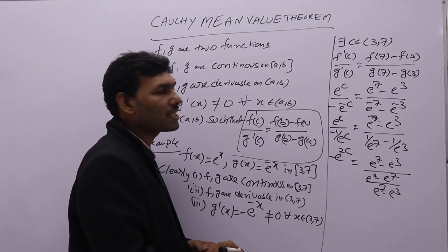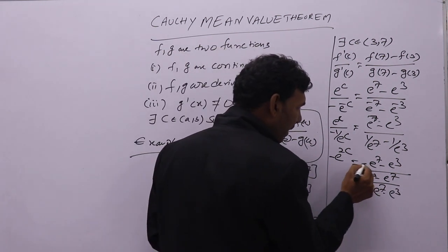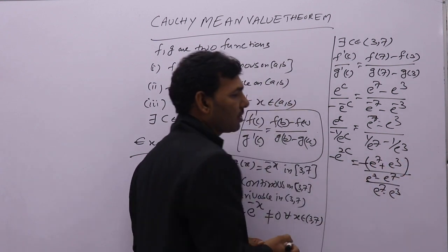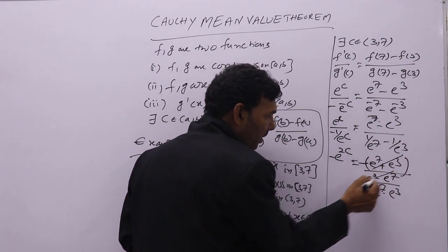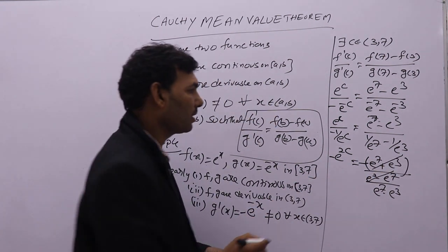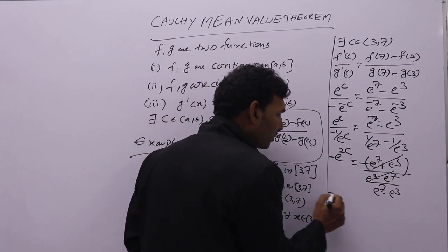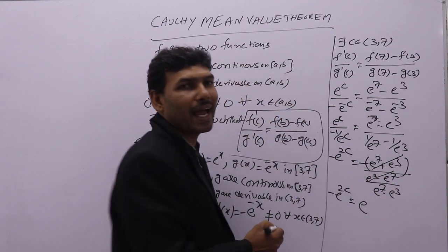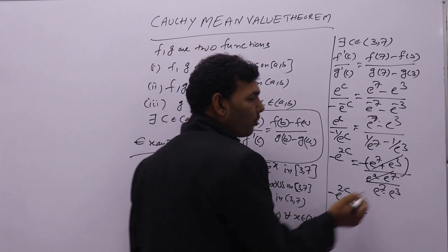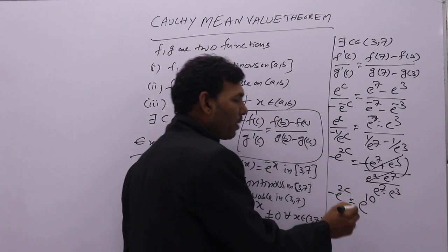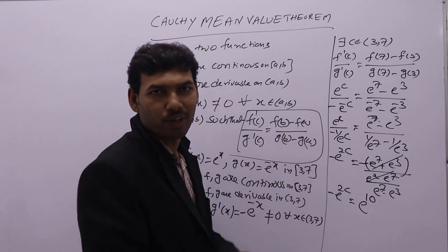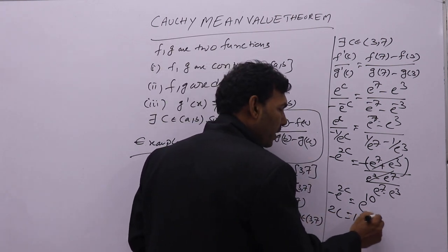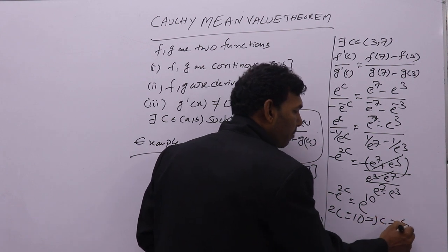Taking minus common from the denominator gives e power 7 minus e power 3, which cancels with the numerator. Then we get minus e power 2c equal to e power 10 (since 7 plus 3 equals 10). Since the bases are equal, exponents are equal: 2c equals 10, so c equals 5.